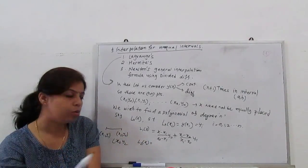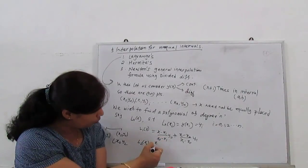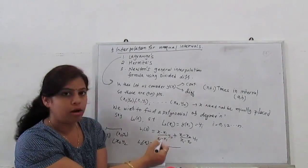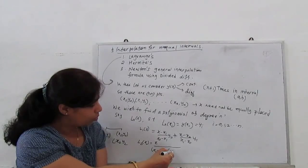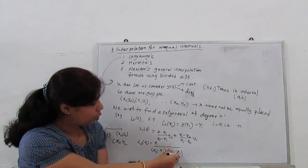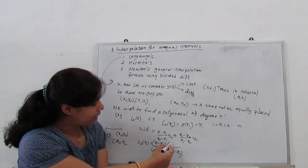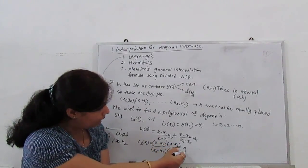L2(x) is given by: x minus x1, x minus x2 over x0 minus x1, x0 minus x2. So above no x0 is there. (x-x1)(x-x2) times y0.